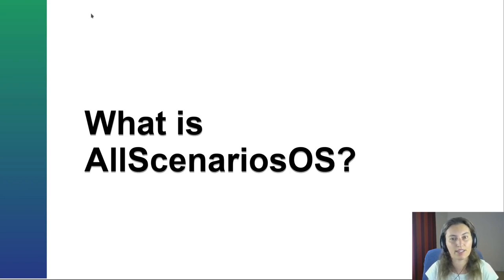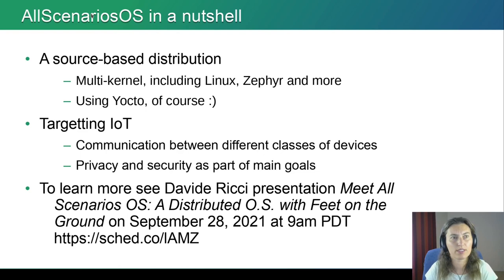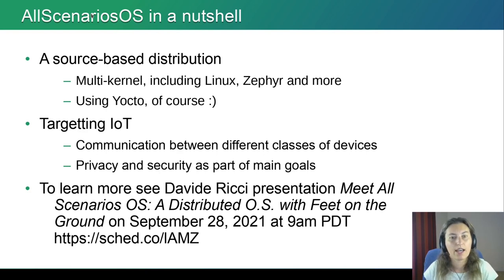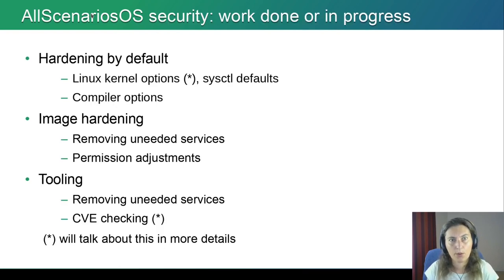Now let's get into the specific case of All Scenarios OS. It's a source-based distribution with multi-kernel support, including Linux, Zephyr, and other kernels, and of course it's using Yocto. The distribution targets IoT devices with communication between different classes of devices — that's why you have both Linux and Zephyr. Privacy and security are among the main goals. From the security standpoint, we have already done security work on the distribution and some other work is in progress.